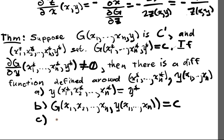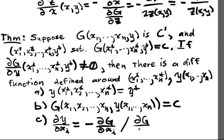And then part c, we have, well, dy/dxi, the partial derivative, is equal to negative dg/dxi, divided by dg/dy.